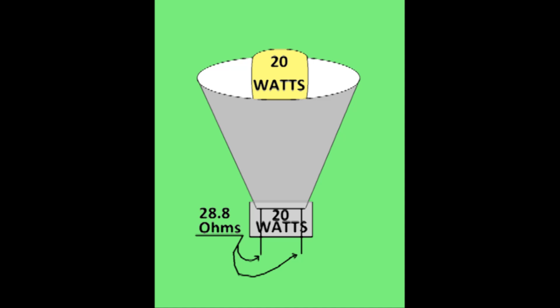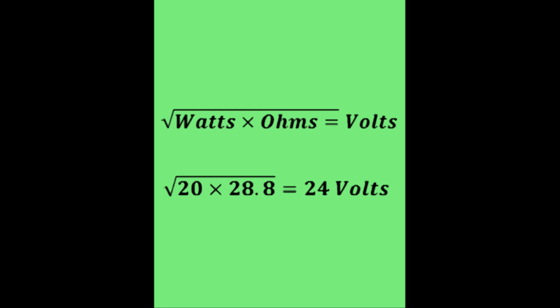Now let's plug the information into this formula, which is the square root of watts divided by ohms gives you the proper voltage needed to ensure long bulb life. We find here that it is a 24 volt bulb.